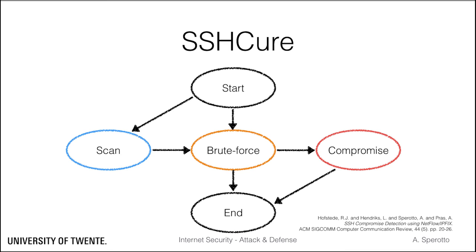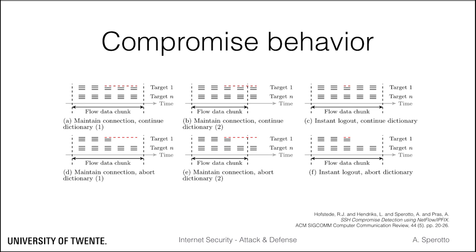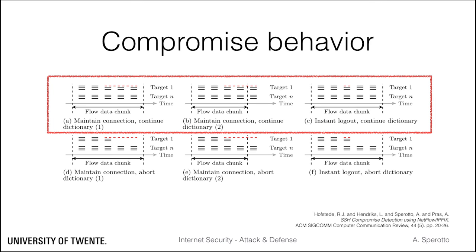We have seen that for this SSH dictionary attack we are able to identify a clear pattern at the flow level — using only flow information — about the time evolution of the attack. Secure uses this pattern to identify the attack state. However, in practice only the scan and brute force states can be quite easily identified. The compromised state presents more challenges. For example, traffic from the target host back to the attacker could be caused by tools like fail2ban, which locally reject connections from possibly offending hosts, while we may incorrectly believe we are dealing with a compromised host. This is where domain knowledge comes in handy. The analysis of attack tools shows that when a compromise takes place, the attack tool can either continue the dictionary attack for the compromised target or abort it.